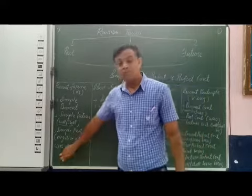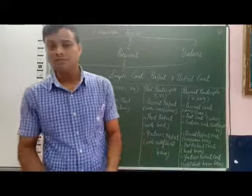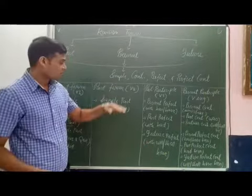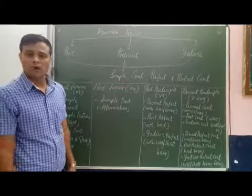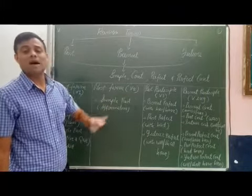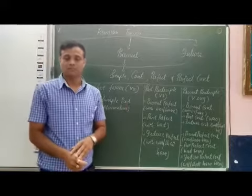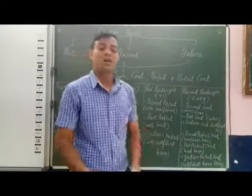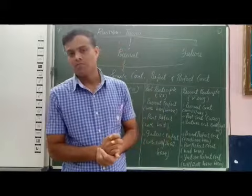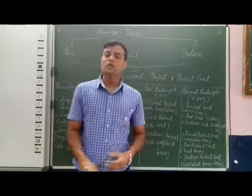We move to V2. V2 means past form of the verb, which we use in simple past tense in affirmative sentences. Next, past participle means V3. V3 or past participle we use in three perfect sentences: present perfect, past perfect, and future perfect.